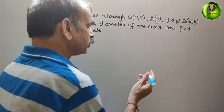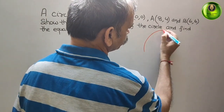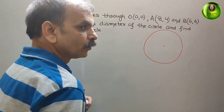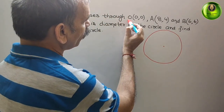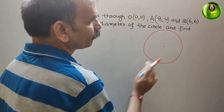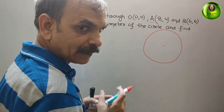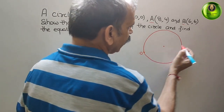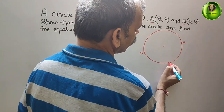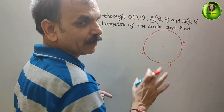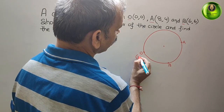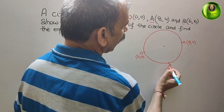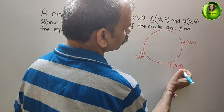Now understand this. Suppose this is your circle and this is the center. They have told these three points — O, A and B — the circle is passing through them. So O coordinate is (0,0), A coordinate is (8,4) and B coordinate is (6,6). These are the coordinates.